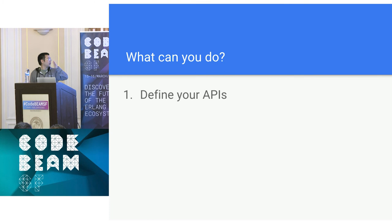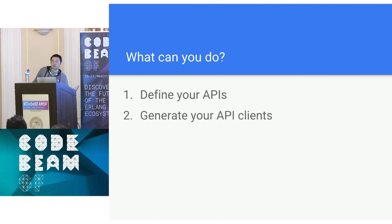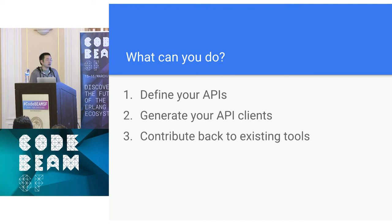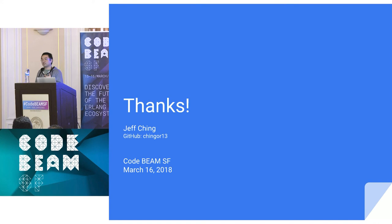So what can you do as an API producer? There are three things. First, define your APIs. Second, generate your API clients — sooner or later you're going to need to scale your API client generation, so get a head start now. Third, use and contribute back to existing tools that are out there. You help other developers and future you. That's all I have, thanks.